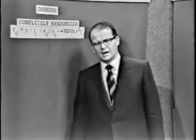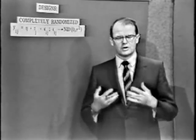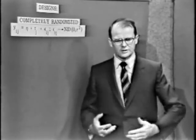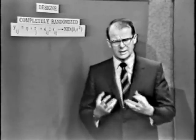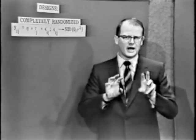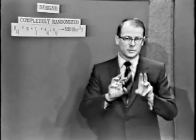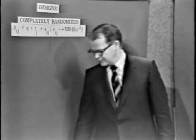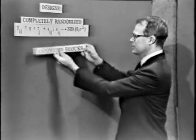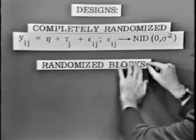The trouble with that kind of experimental design is that often there are sources of variability which we know exist, which we can readily identify, and we'd like to block out these sources of variability in our estimate of the variance. And so that brought us to the next class of experimental designs called the randomized blocks.